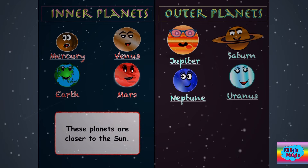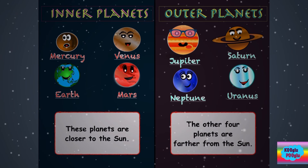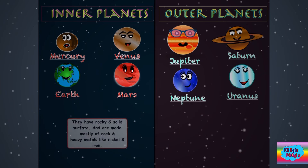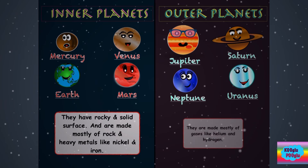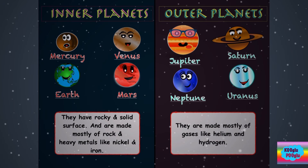Our inner planets are closer to the sun, while the other four planets are farther from the sun. Inner planets have a rocky and solid surface and are made mostly of rock and heavy metals like nickel and iron. Outer planets are mostly made of gases like helium and hydrogen.